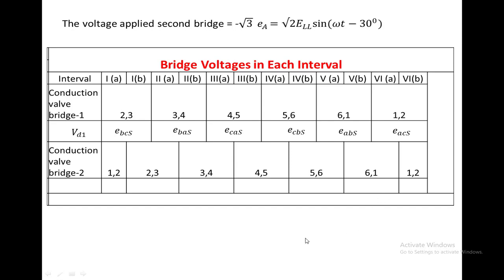For converter 2, the voltage applied will be lagged by 30 degrees relative to converter 1. So at the instant device 3 is on in converter 1, the corresponding device in converter 2 will be lagged by 30 degrees. The conduction sequence for converter 2 is 2-3, 3-4, 4-5, 5-6, 6-1, 1-2, and these are the corresponding output voltages.